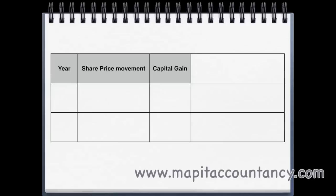Now we're asked for the total shareholder return and the capital gain. The capital gain is the amount the share price has gone up, expressed as a percentage. In 2008, the share price was $7.40 in 2007 and $8.35 in 2008. So the capital gain is 95 cents. As a percentage, we needed to invest at $7.40, so 95 cents out of $7.40 is a 12.8% capital gain.